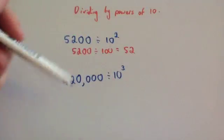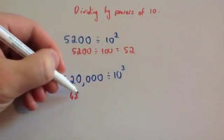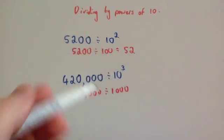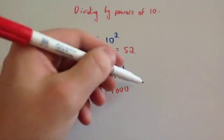420,000 divided by 10 cubed, well, 10 times 10 times 10 is 1,000, so you've got 420,000 divided by 1,000. Whenever you divide by 1,000, you take off 3 zeros, so 1, 2, 3, so your answer would be 420.